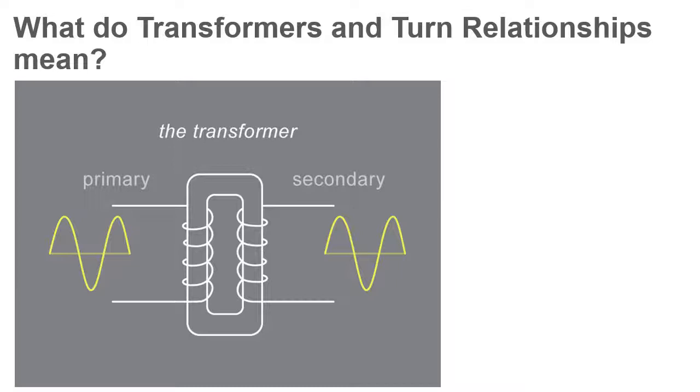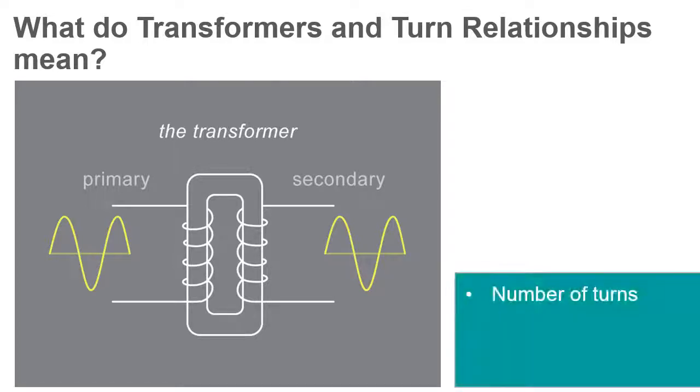There are many ways in which a transformer can provide an output different from its input. One of these ways that you will investigate in Lab 10 is through the use of a different number of coils, or turns, of wire on the primary and secondary coils of the transformer.